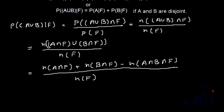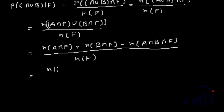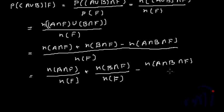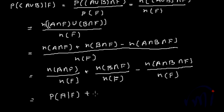This can be written as N(A∩F) divided by N(F), plus N(B∩F) divided by N(F), minus N(A∩B∩F) divided by N(F). This equals the probability of A given F, plus the probability of B given F, minus the probability of A∩B given F — which completes the first part of the proof.